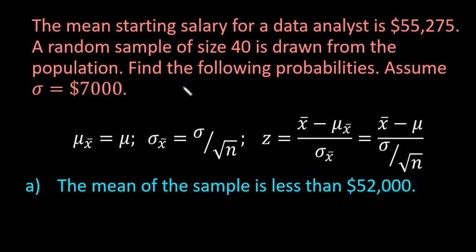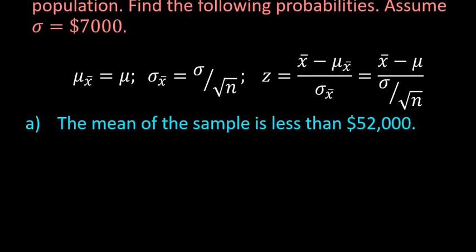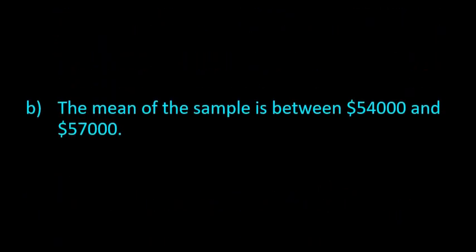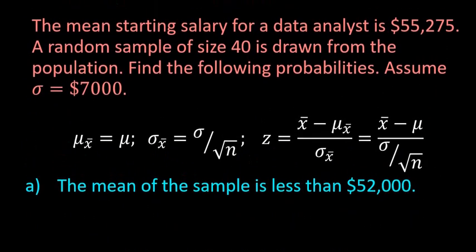With this problem, the situation is the mean starting salary for a data analyst is $55,275. A random sample of size 40 is drawn from the population and we want to find the following probabilities. We have three scenarios: one with less than, one with between, and one with more than, so you can see all three situations.